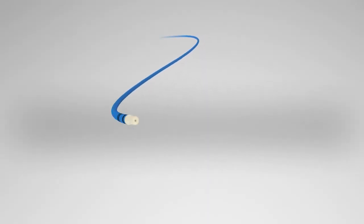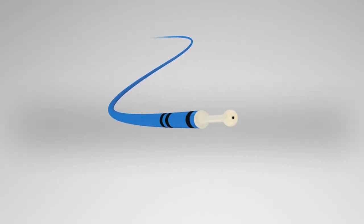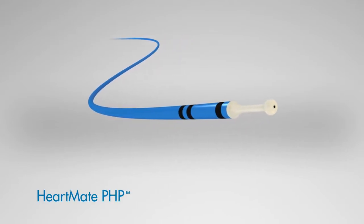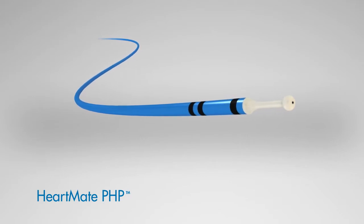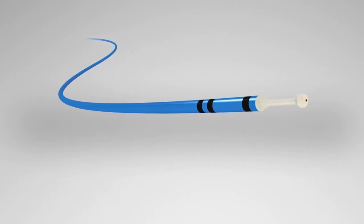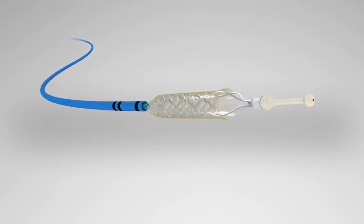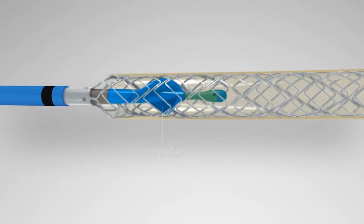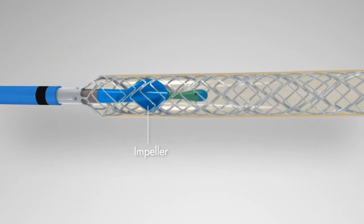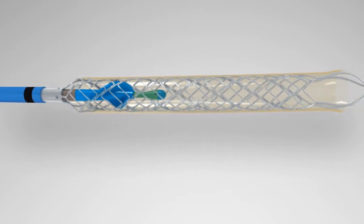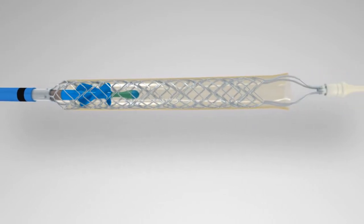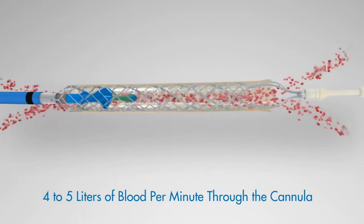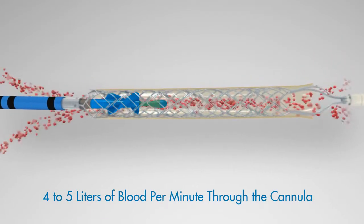HeartMate PHP from Thoratec Corporation is a low-profile percutaneous heart pump designed to provide rapid left ventricular hemodynamic support. The key feature of the PHP is its expandable covered nitinol cannula with integrated impeller. The cannula is positioned across the aortic valve and the impeller spins to move 4 to 5 liters of blood per minute through the cannula from the left ventricle into the ascending aorta.